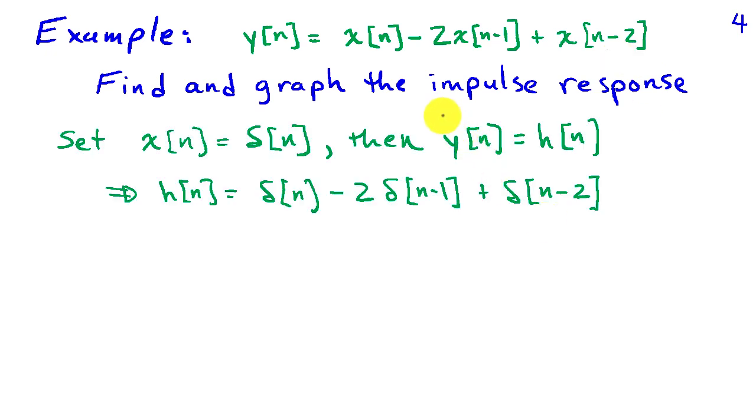The way we obtain the impulse response is to see how the system responds to an impulse. So we're going to set the input equal to delta of n, an impulse, and then the impulse response is equal to the output.